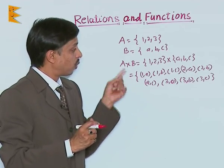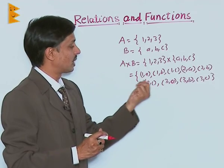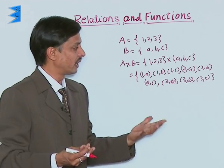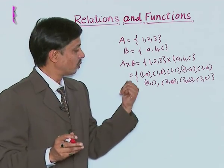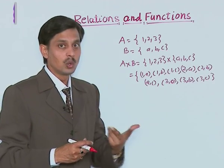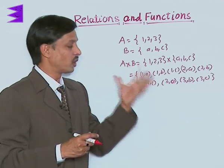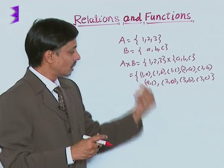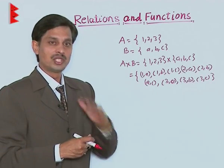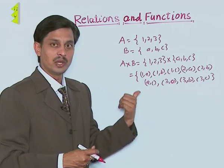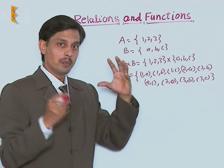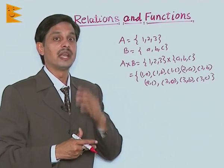Now, whatever total number of subsets are possible of A cross B, that is the total number of relations. So what we are going to understand is that if there are two non-empty sets, then the Cartesian product is obtained. Any subset of any Cartesian product is known as the relation, which I will explain to you in next video—how to obtain different types of relations with the Cartesian cross product of set itself.